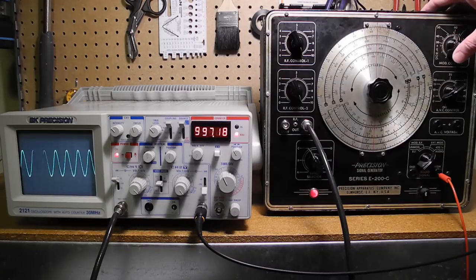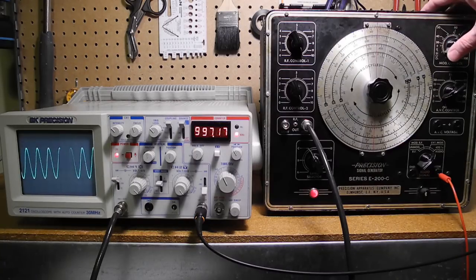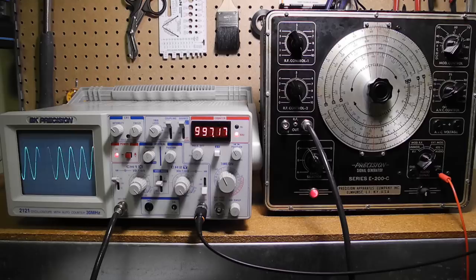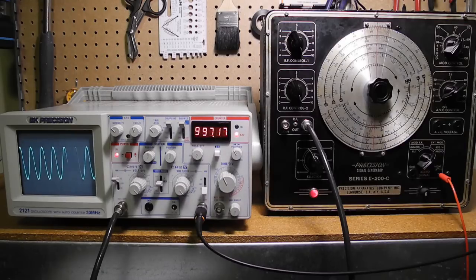The level is adjustable and goes up to approximately 115 volts RMS without a load. This signal is useful for testing the audio stages of a radio receiver or amplifier, for example.